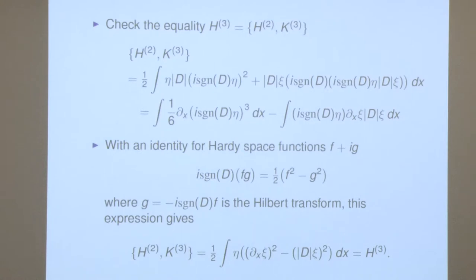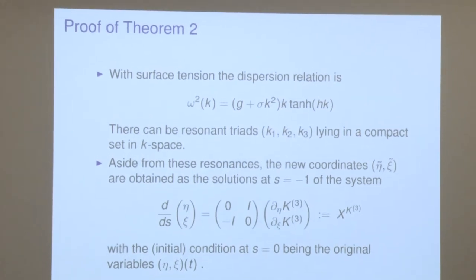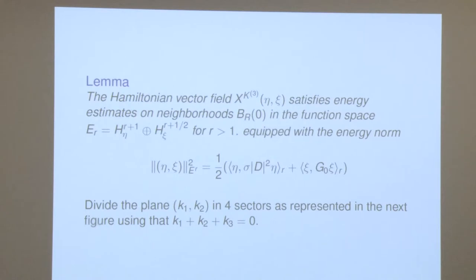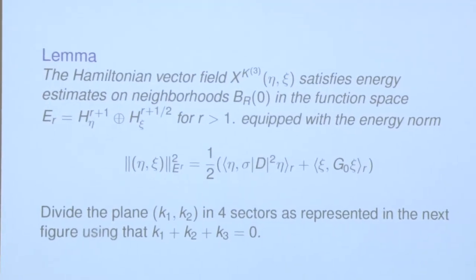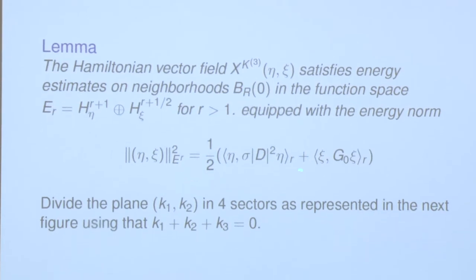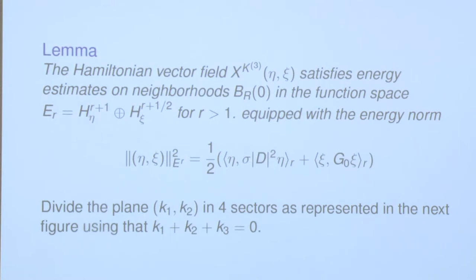The main result is that the new Hamiltonian has the quadratic term plus a remainder of fourth order. In the presence of surface tension the energy space is slightly modified due to sigma, but the result is similar: the transformation is well-defined and continuous, and in particular the Jacobian and higher order derivatives are also continuous in the appropriate space.